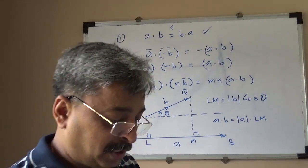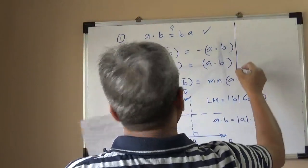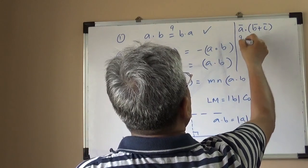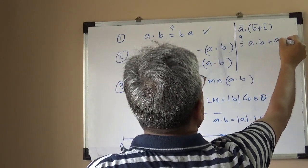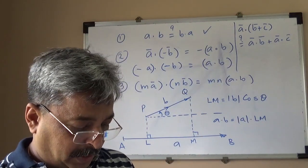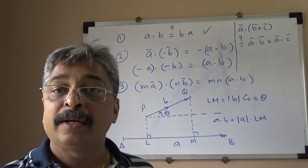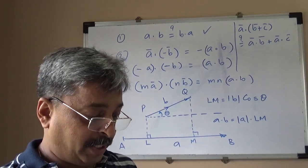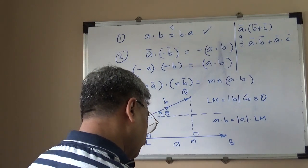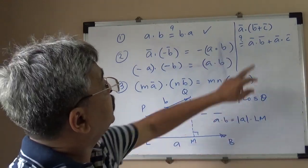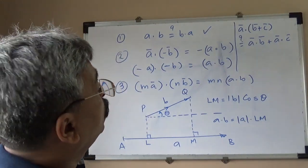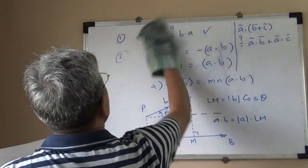We need to check whether the dot product is distributive. Distributive means: is A·(B + C) equal to A·B + A·C? This can be proved using the projection method, and I hope you should be able to do it. If we take a minus sign, it distributes over subtraction as well. Make sure these properties are proved.